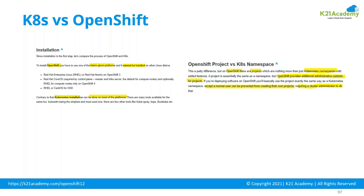The second difference is namespace versus project. In Kubernetes, a namespace is a logical partitioning of your cluster. In OpenShift, you call the same concept a project. The project concept is more mature — external users can be prevented from accessing a particular project, and you can give administrators limited or required access, giving you more control than Kubernetes namespaces.